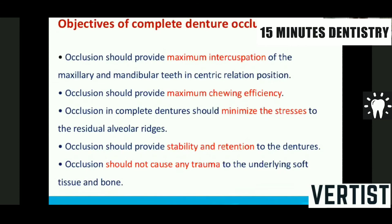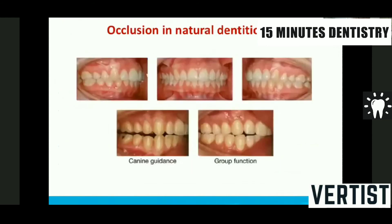There are five objectives of complete denture occlusion. It should provide maximum intercuspation to maximize chewing efficiency, minimize stresses, and aid in stability and retention. It should not put excessive load on tissues, which leads to resorption. In natural class I dentition, maximum intercuspation occurs in centric occlusion. During lateral excursion, either canine-guided occlusion occurs — where only the canine tip touches — or group function, where all teeth on the working side contact.